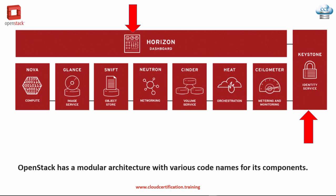Additionally, the catalogue provides a queryable list of all the services deployed in an OpenStack cloud in a single registry. Users and third-party tools can programmatically determine which resources they can access. In a nutshell, Keystone is your identity service to provide access not only for yourself but also for all the other key components to be able to talk to each other. We'll go a little bit deeper into that in some subsequent slides.